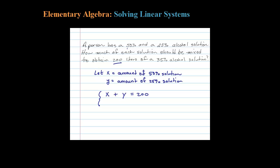When working with two variables you need two equations, so let's work on our second equation using the alcohol content. 50% of that amount is alcohol, plus 25% of the other solution is alcohol. The total alcohol content in the end will be 35% of the 200. Notice the 200 — folks often leave that off and get it wrong, because a percentage times an amount plus a percentage times an amount has to equal a percentage times an amount.